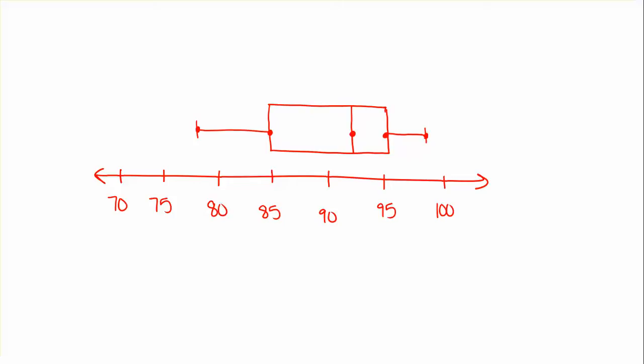That's what a box and whisker plot looks like. Typically things aren't labeled, but we'll label them here: minimum value, maximum value, median, lower quartile, and upper quartile. That's how all box and whisker plots are drawn.